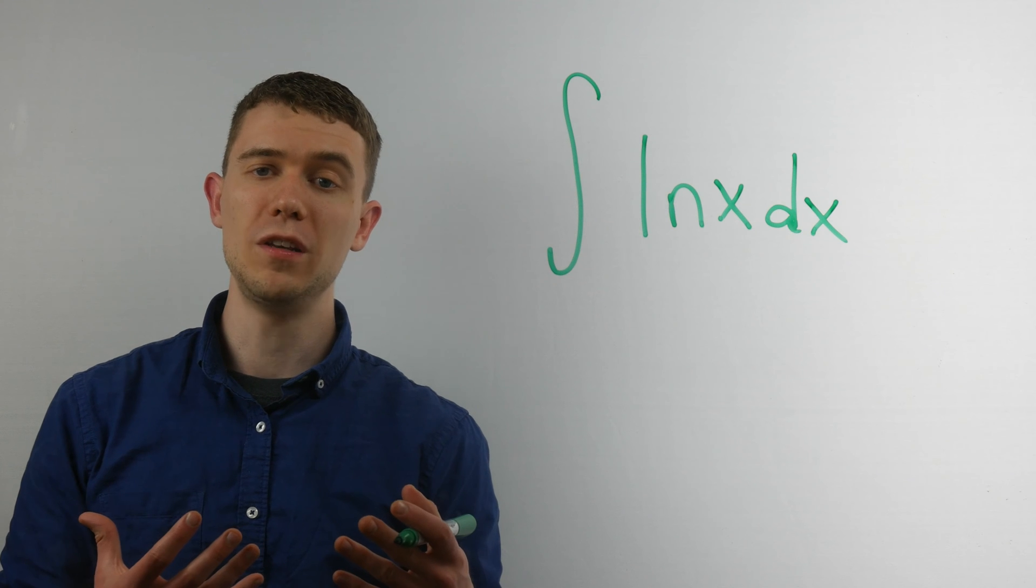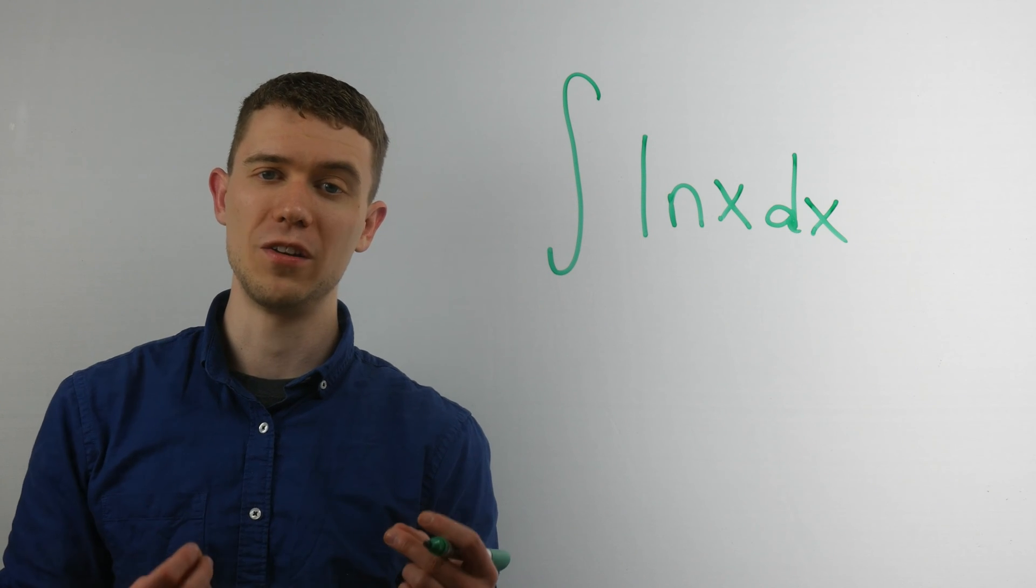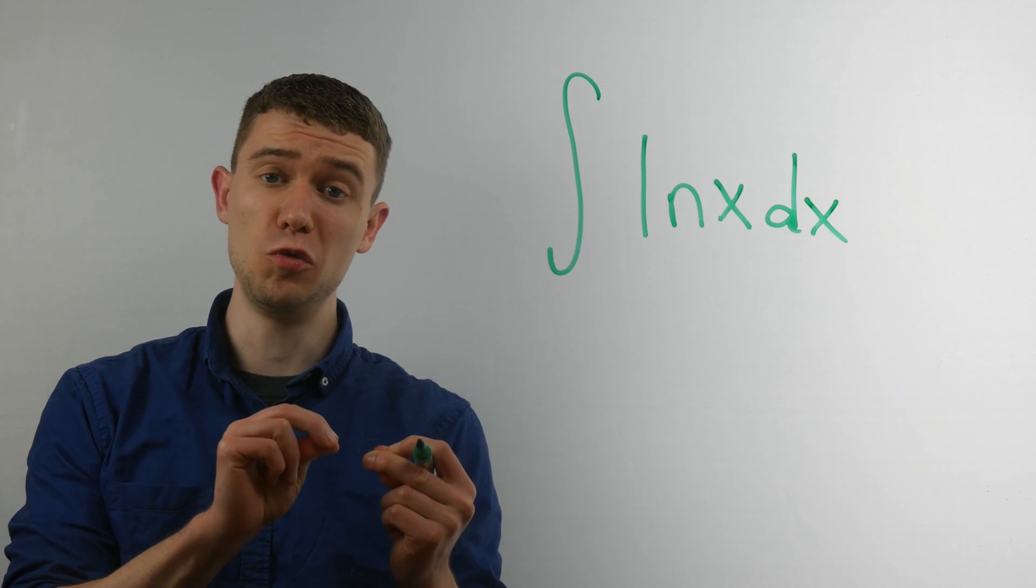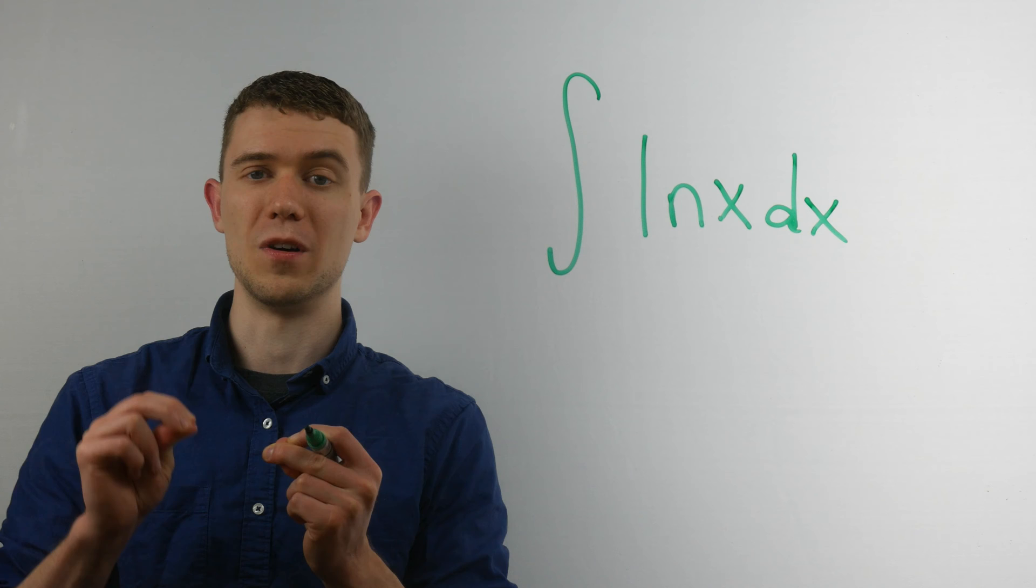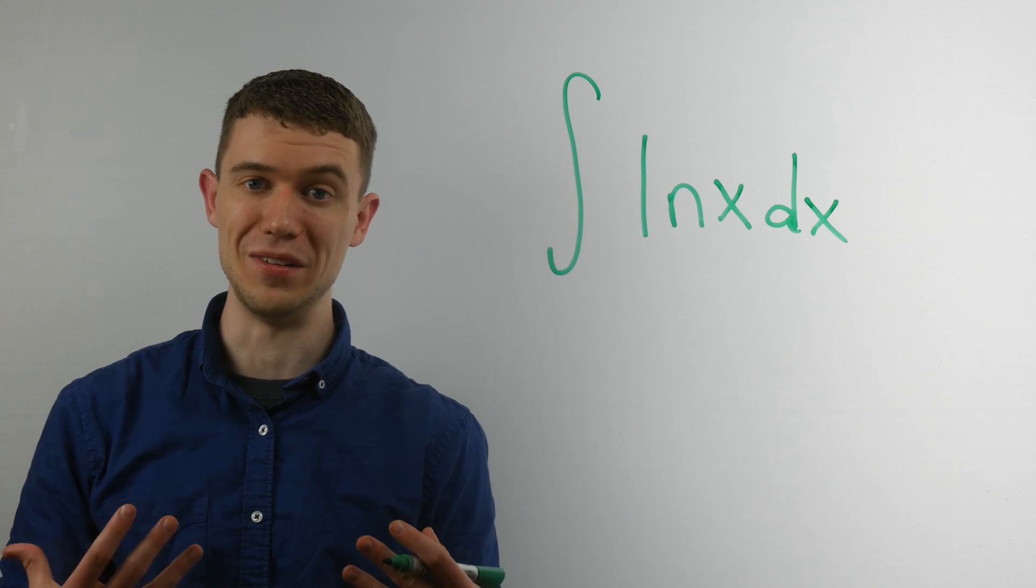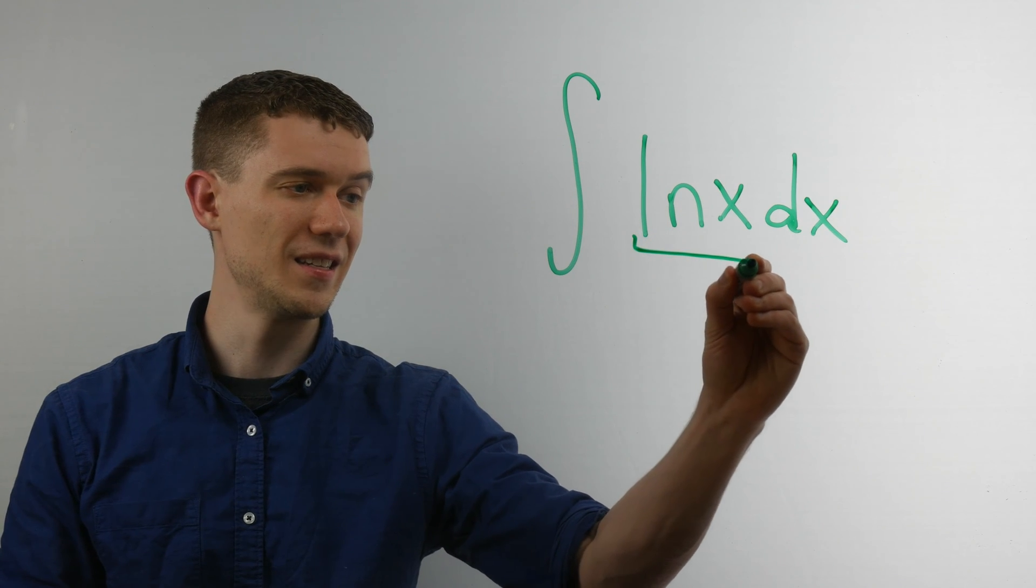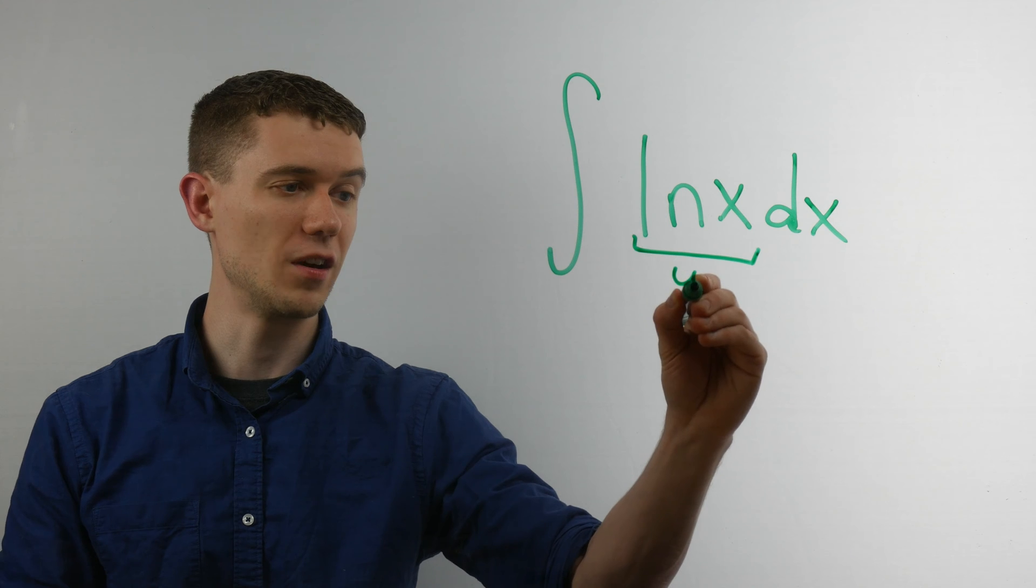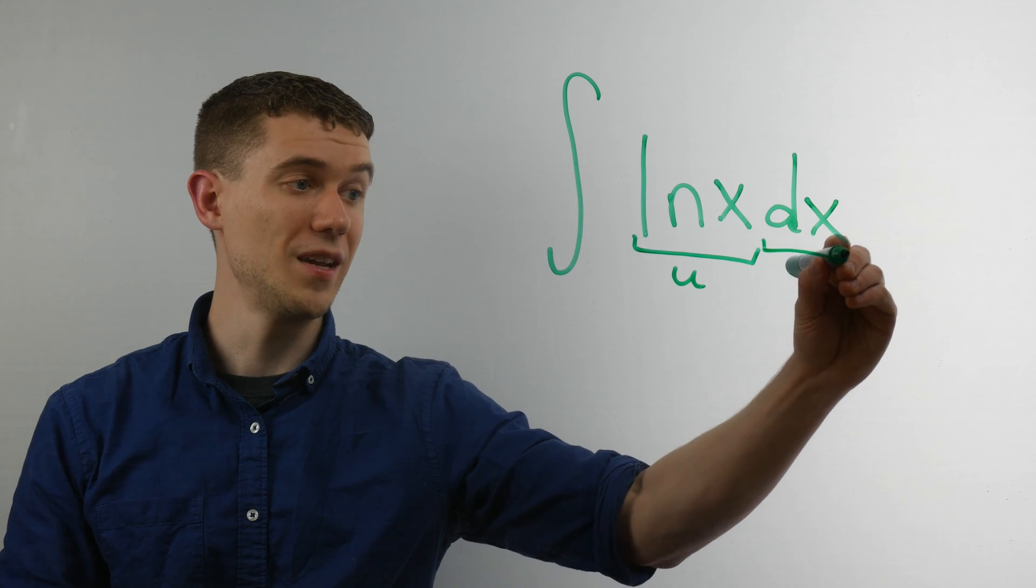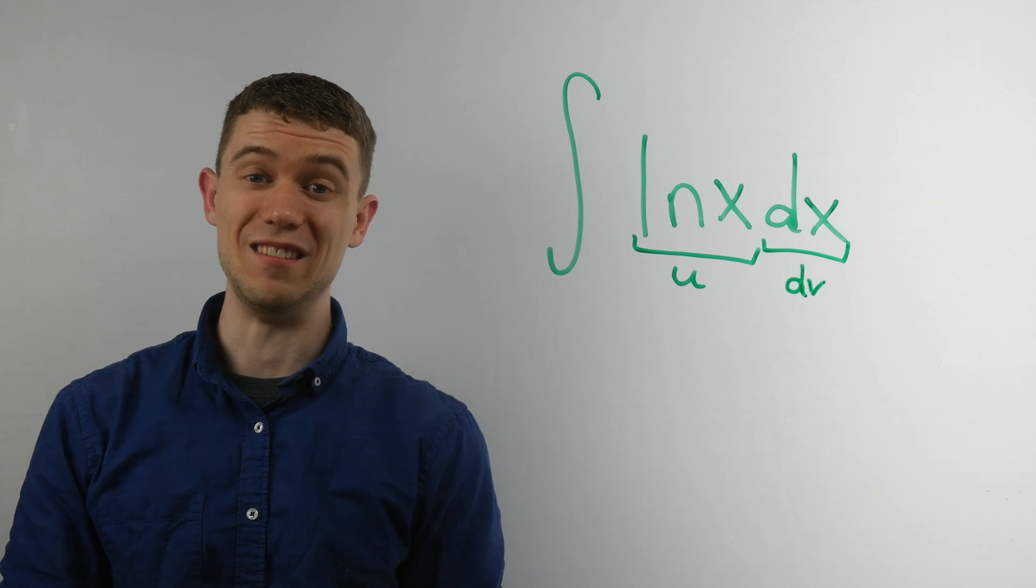And so what we're going to be using is integration by parts. If you don't remember how to do that, what we do is we need to select a u and a dv from our integrand. And maybe you use different letters than I do, but I'll be using u and v. And so what that looks like is this. And in this example, I'll be selecting natural log x as my u, and I'll be selecting the remainder of the stuff, in this case, dx as my dv.